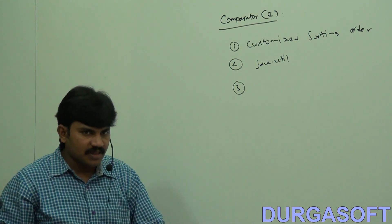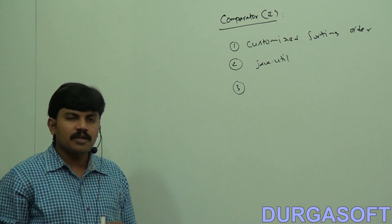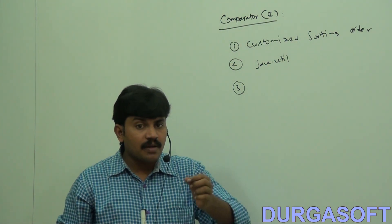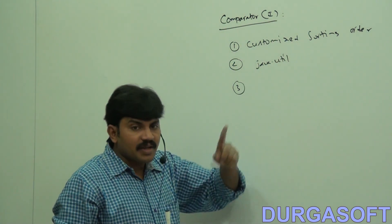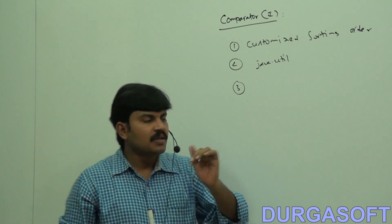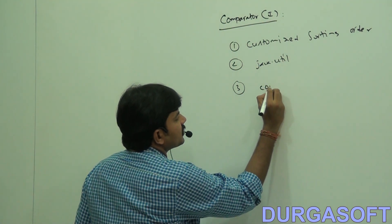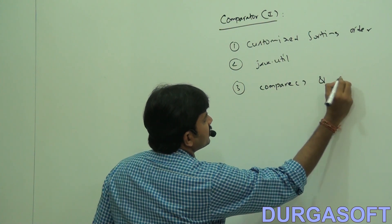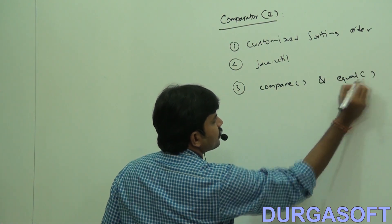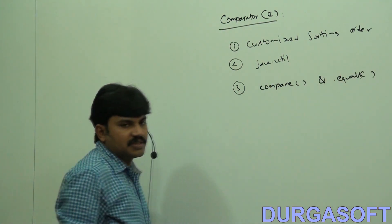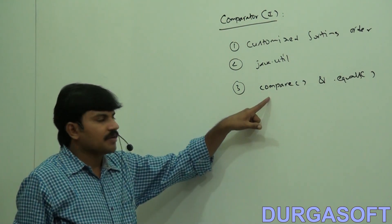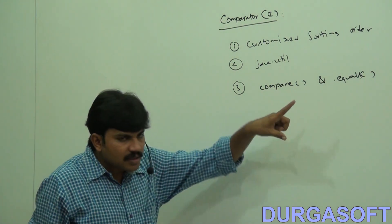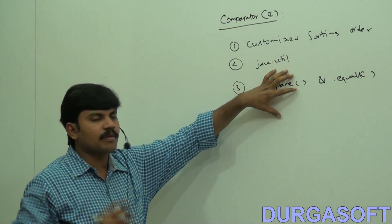Comparator interface contains how many methods? Comparable contains only one method. Comparator contains two methods. The first method is the compare method and the second method is the equals method.